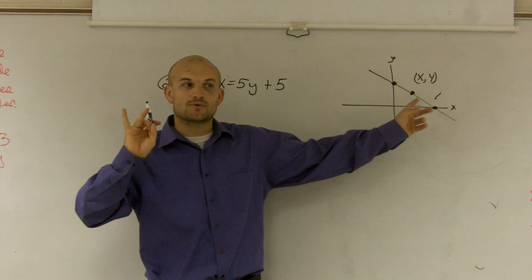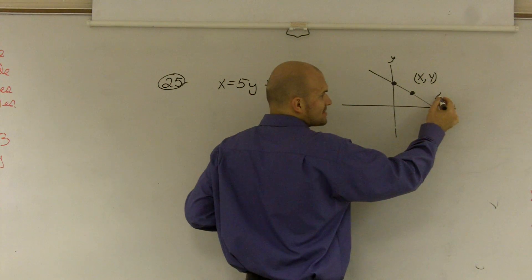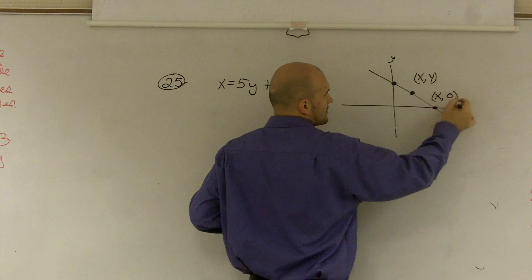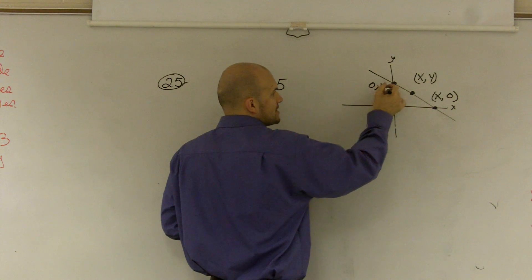There's two important things when you have intercepts. One is at the x-intercept, my y-value is equal to zero. And the important thing at the y-intercept is my x-value is equal to zero.